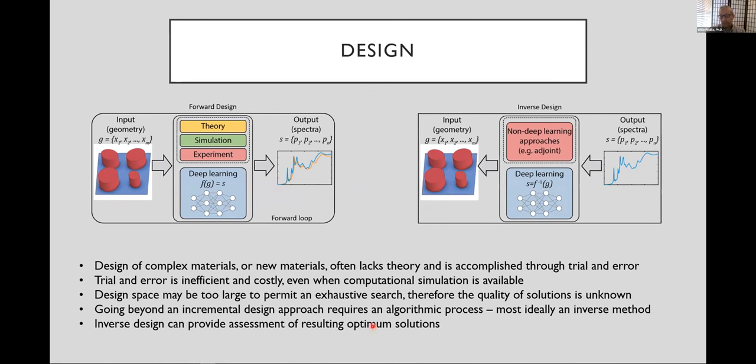So inverse design can provide an assessment of the resulting solutions. So as I mentioned, what we want to do is specify some transmission or some spectra and have some algorithmic approach, in this case we're using deep learning, to tell us what geometry we can use to achieve that spectral response.